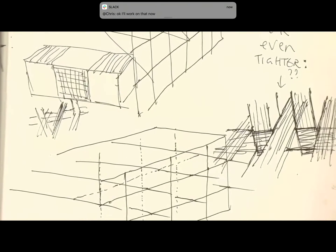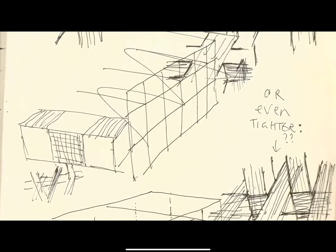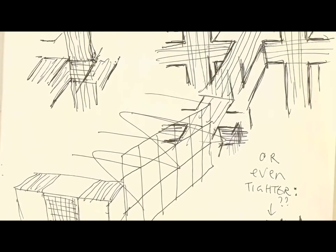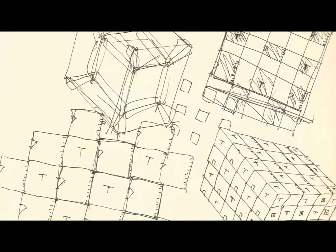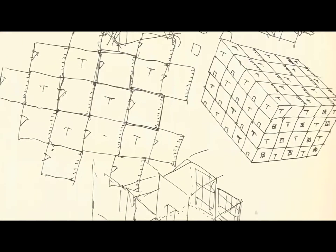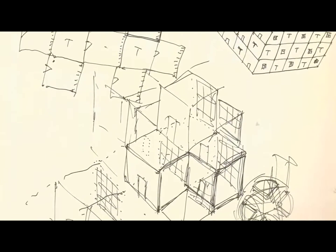A Tesseract is the three-dimensional shadow of a four-dimensional hypercube that's been unfolded. So if you imagine, when you take a cube and unfold it, you'd end up with six panels in a roughly crucifix shape. Well, a Tesseract is the same thing, but instead of flat panels, each of those faces of the Tesseract is a three-dimensional cube.